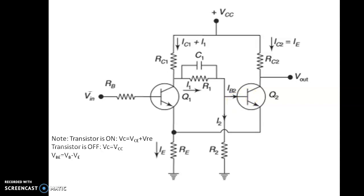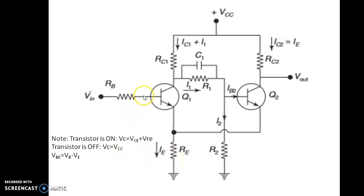Now let us see the condition of transistors Q1 and Q2 when no input is given. We are going to use transistors Q1 and Q2 as switches. When transistor Q2 is on, its collector voltage will be equal to VCE plus VRE. When a transistor is off, its collector voltage will be equal to VCC, and VBE equals VB minus VE.